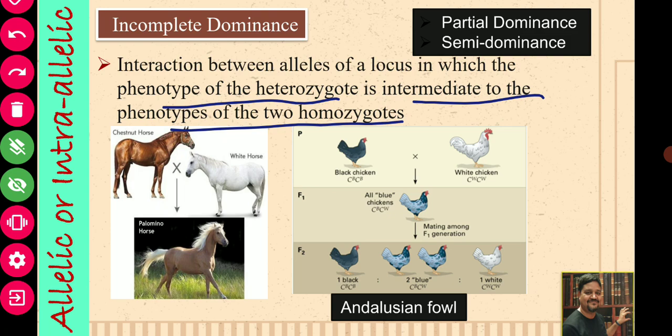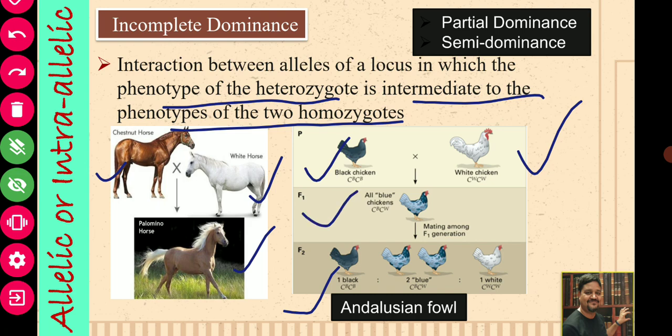For example, when a chestnut horse is crossed with a white horse, it will produce a palomino horse. This palomino horse displays a coat color intermediate between the chestnut horse and the white horse. Another famous example in poultry is in Andalusian fowl — when black chicken is crossed with white chicken, in F1 generation you will get all blue chicken. This blue chicken is intermediate between the black and white chicken, meaning both alleles express their characteristic with intermixing, producing a different phenotype.